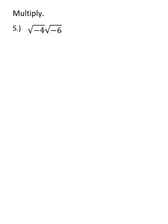Okay, to multiply these radicals, we can't just multiply the radicands together because they're both negative. So we want to get rid of that negative under the radical and then go from there.